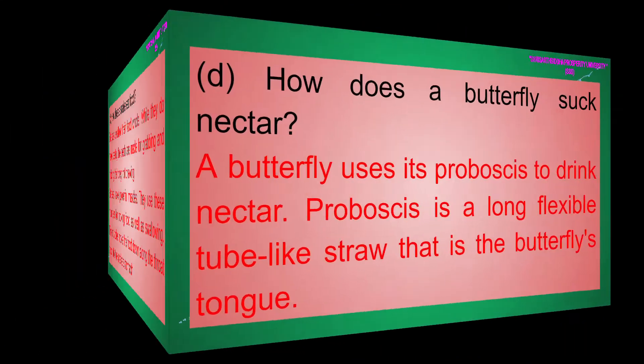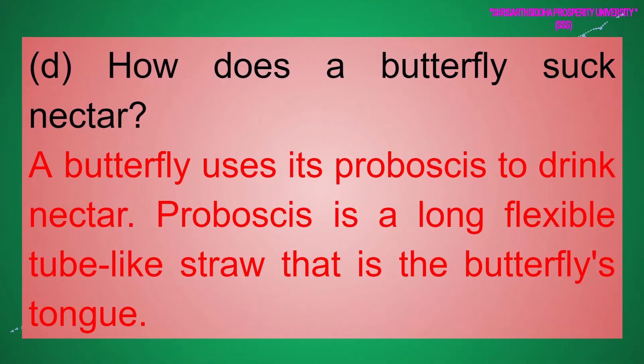(d) How does a butterfly suck nectar? Answer: A butterfly uses its proboscis to drink nectar. The proboscis is a long, flexible tube-like straw that is the butterfly's tongue.